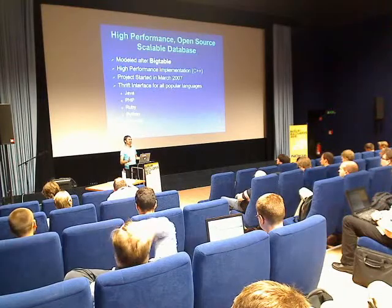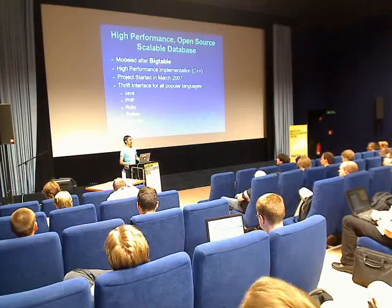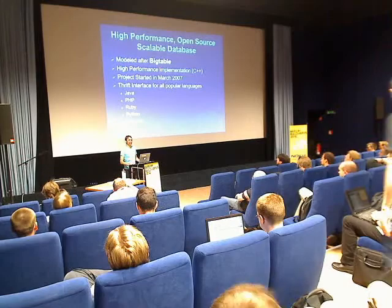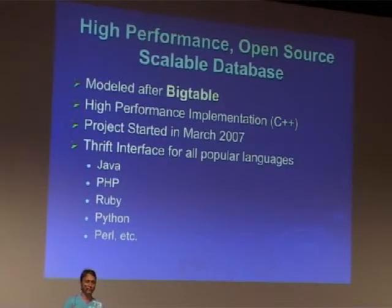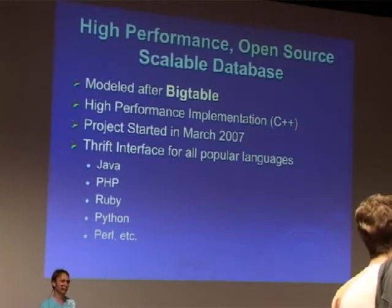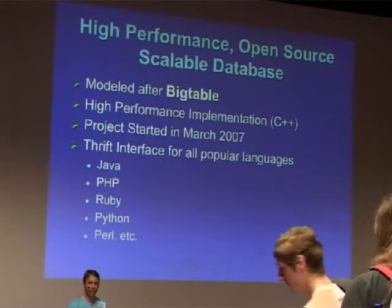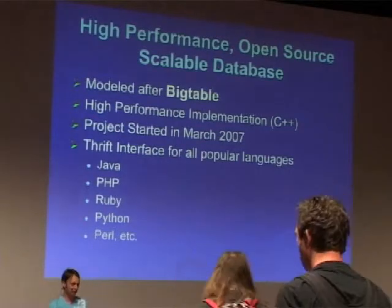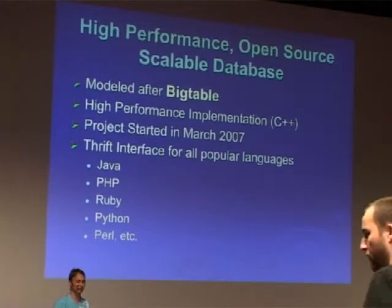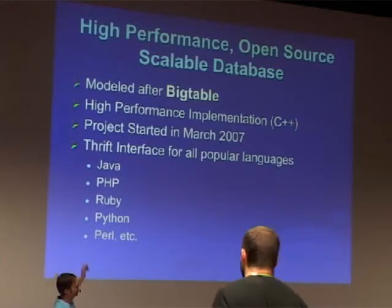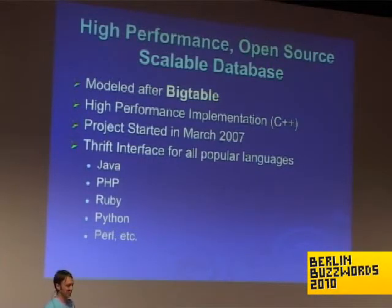One of the big focuses of the Hypertable project has been on performance. We strongly feel that efficiency gains scale linearly with the system, so for many workloads that has the effect of reducing the amount of hardware required to deliver the same capacity, which ultimately lowers cost. To that end, we implemented the system in C++. Even though the system is implemented in C++, we have a Thrift interface that provides bindings for all the popular high-level languages.